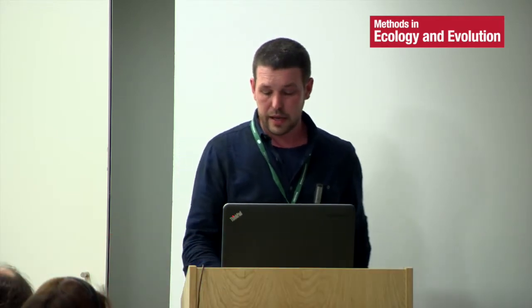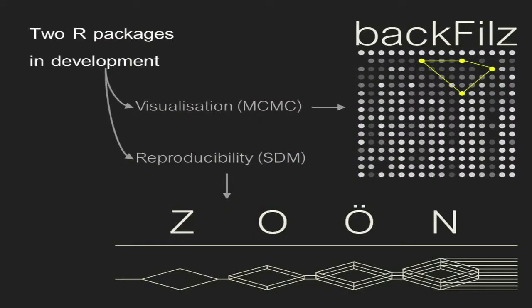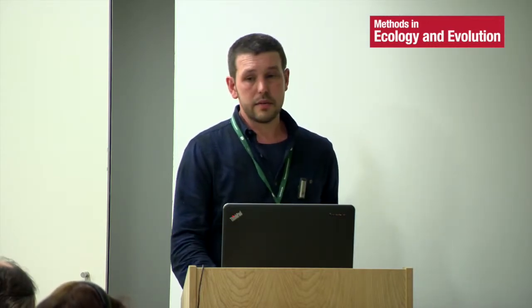What I'm going to talk about today is two fundamental methodological issues that we don't really talk about enough, considering how fundamental they are to science. I'm going to talk about two R packages our colleagues are developing: one for visualization of MCMC chains, and one for addressing reproducibility in species distribution modeling. If you ask someone what I do, they say I do pretty visualizations and user-friendly software, usually because I haven't explained myself enough about the design side, which is actually a really important part of science.